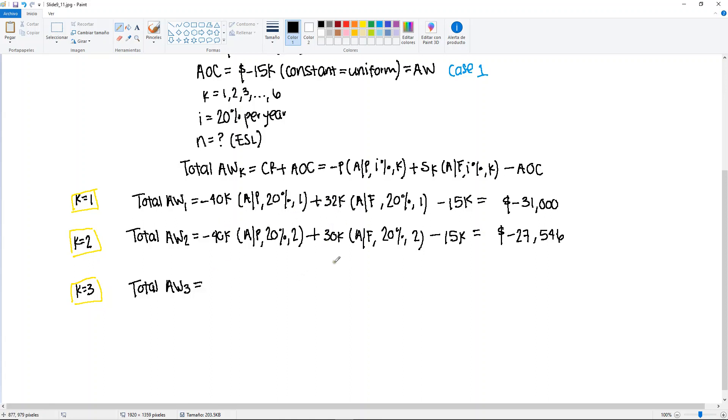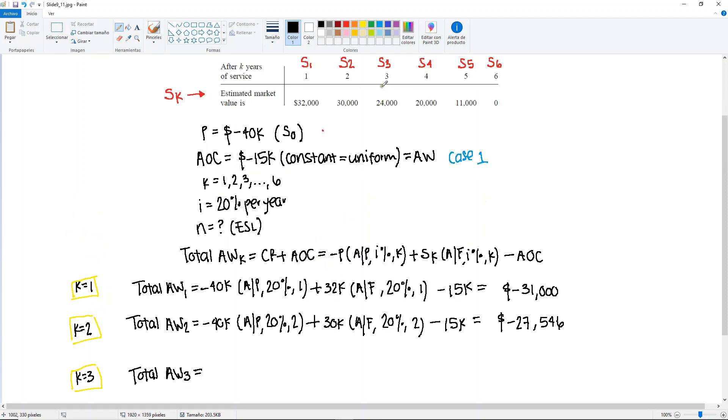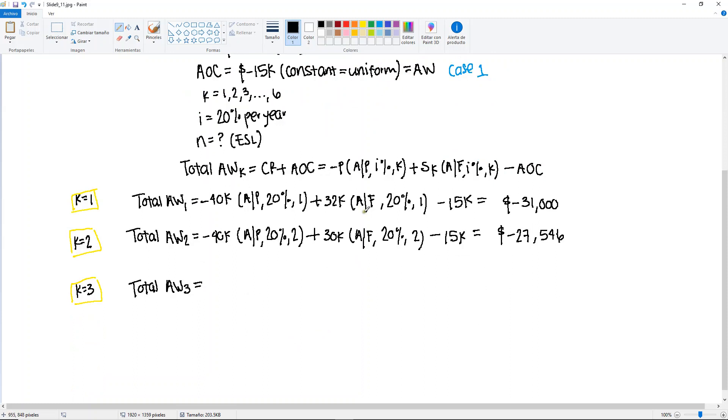I'm not going to write down the entire formula but know that you keep the present, you just change the N. Select the corresponding salvage value which in this case would be 24,000 for year 3, and subtract the annual operating cost. Try it on your own. And you will get minus 27,395.